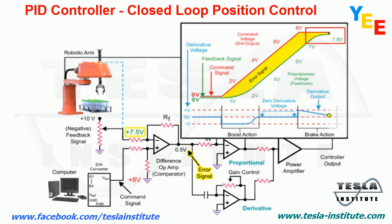Friction and mass of the robotic arm contribute to the system negatively where the robotic arm fails to reach the desired position. With a reduced error signal due to feedback voltage and command voltage not being equal, a steady-state error condition exists.